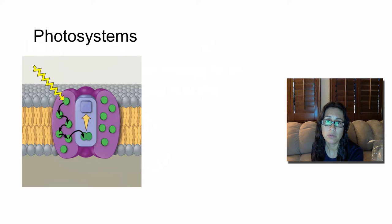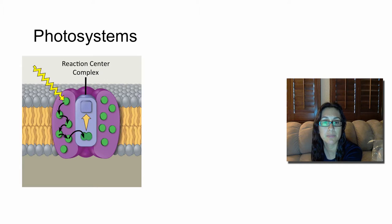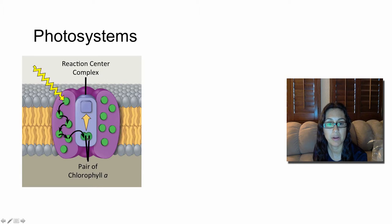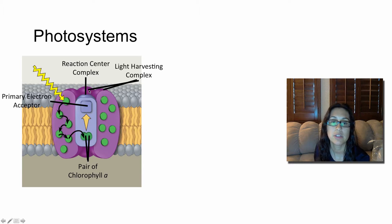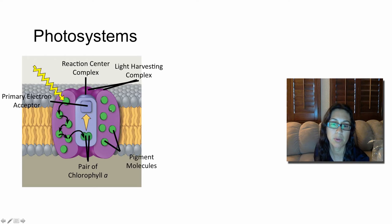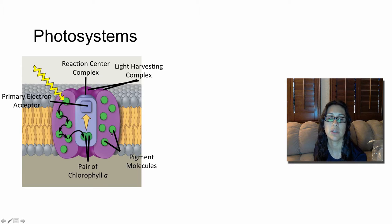Photosystems are important to know. When we look at the parts of a photosystem, we see the reaction center complex. Inside the reaction center complex we have a pair of chlorophyll A pigments and our primary electron acceptor. On the outside of a photosystem you have the light-harvesting complexes, composed of proteins and other molecules along with pigment molecules. These pigment molecules can be chlorophyll A, chlorophyll B, or even carotenoids.